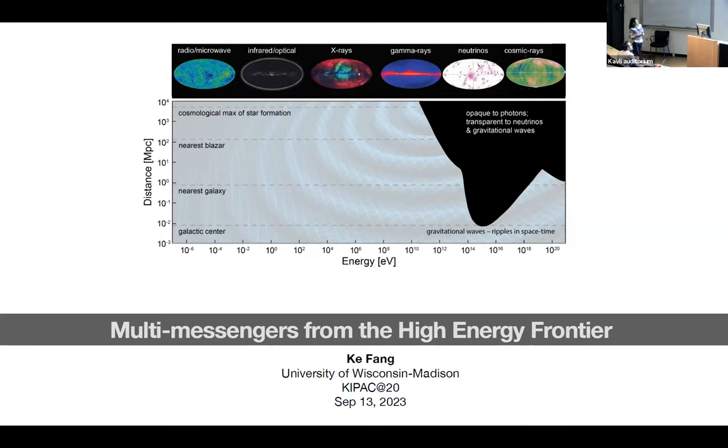On the top, I'm showing you the sky maps in radio microwave, which are mostly the beautiful CMB and infrared optical, which are usually distant stars and galaxies, x-rays where you already start to see the bubble plus a lot of distant AGNs plus also the galactic plane, and gamma rays from Fermi. And then the interesting aspect of multi-messenger in this particular plot shows up at the higher energy.